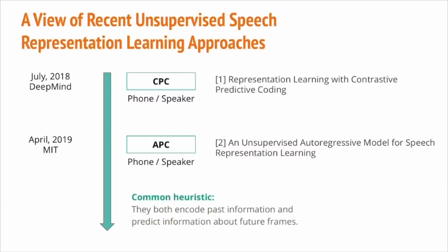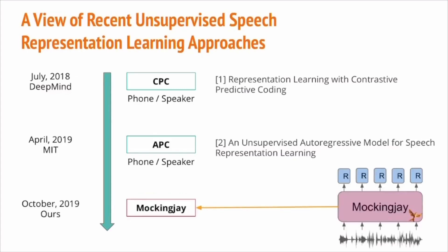Note that CPC and APC share a common heuristic: they both encode past information and predict information about future frames. In contrast, the proposed Mockingjay predicts the current frame by conditioning on both past and future contexts. During training, masked frames are given and the model learns to reconstruct and predict the original frames. Hence, we gave the name Mockingjay, following the bird that mimics sound.